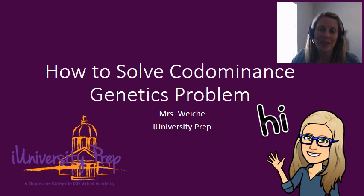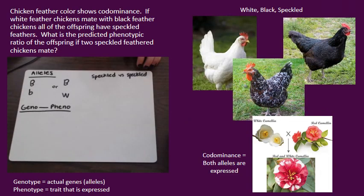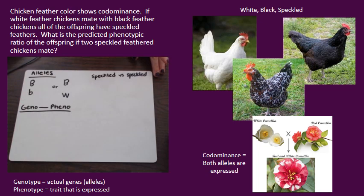Hello, Ms. W here, and together we're going to solve a genetics problem based on co-dominance. The genetics problem we're going to solve today is: chicken feather color shows co-dominance. If white-feathered chickens mate with black-feathered chickens, all of the offspring have speckled feathers. What is the predicted phenotypic ratio of the offspring if two speckled-feathered chickens mate?